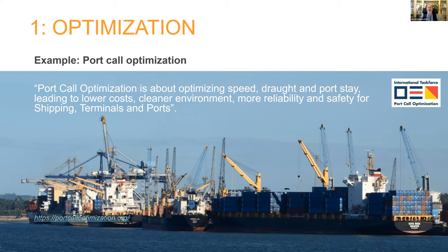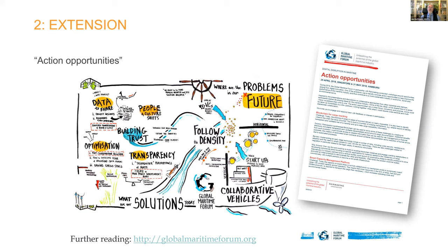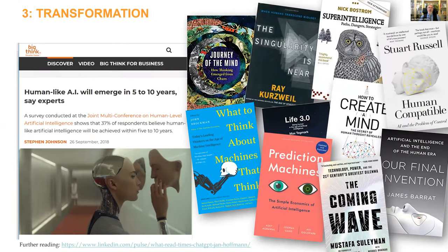The next step is extension — new technologies give new business opportunities. And the real big thing is transformation. I put this slide together five years ago. The more I read about AI, the more I'm amazed and a bit frightened. The book 'The Coming Wave' is highly recommended — it is amazing, frightening, and describes genuine transformation. What is the impact of artificial intelligence on the future of international transport and logistics?